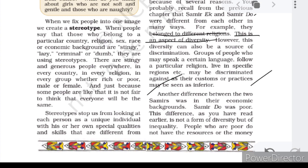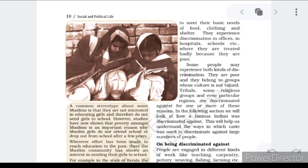Another difference between the two Samirs was in economic background — Samir Ek was rich and Samir Do was poor. This difference is not a form of diversity but of inequality. Samir Do was poor because of his situation, while Samir Ek was rich because of his family background. People who are poor do not have the resources or money — not because of diversity, but because resources are not available to them. Their inability to meet basic needs of food, clothing, and shelter is why they are known as poor.